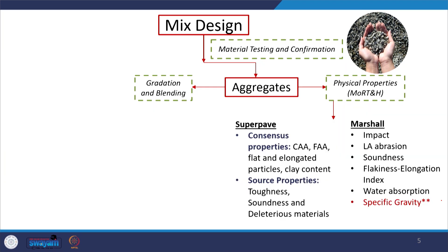Talking about the physical properties — we will be discussing Marshall and Superpave mix design together so we can understand the steps and differentiate between the two methods. In the Marshall mix design method, we use typical tests as given by the highway agency. In India, we use the specification outlined by the Ministry of Road Transport and Highways, which requires tests like impact, Los Angeles abrasion, soundness, flakiness and elongation index, water absorption, and specific gravity — which must be measured irrespective of any mix design process.